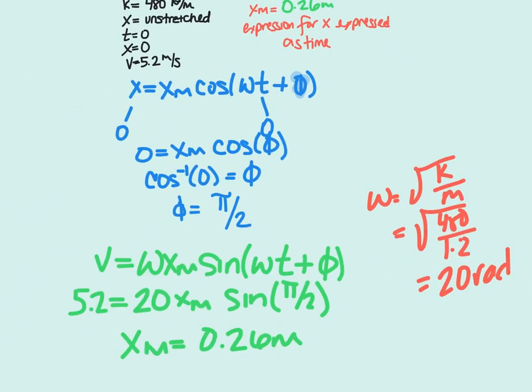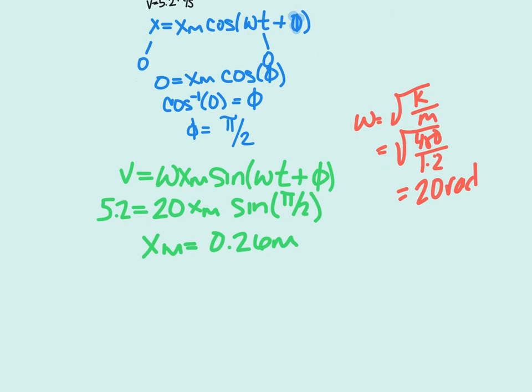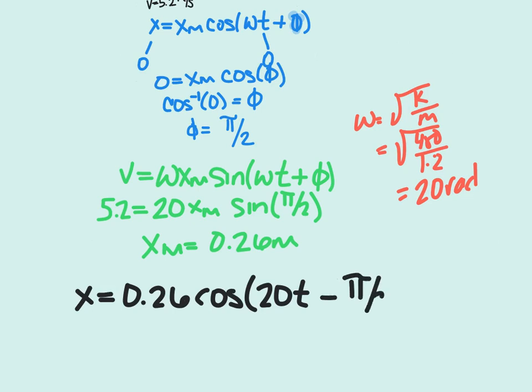The last thing we're asked to do is to write this in terms of time. So we have x equals 0.26 cosine of 20 times t minus pi over 2, and that would be our expression.